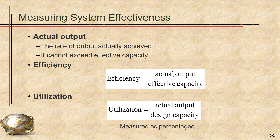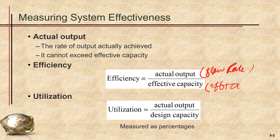The formula for efficiency is: actual output — or flow rate — divided by the effective capacity, that means after subtracting the allowances from the design capacity. To calculate utilization, we use actual output divided by the design capacity, which is the maximum output rate without subtracting the allowances. If you want to calculate in terms of percentage, simply multiply by 100.